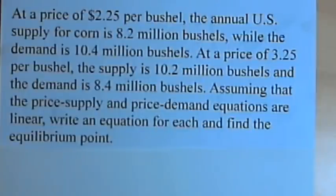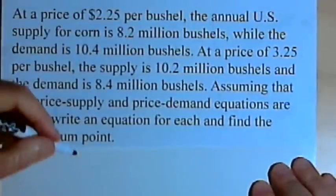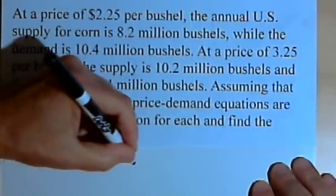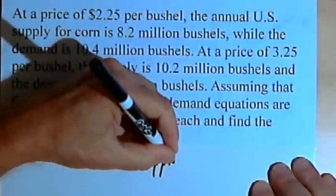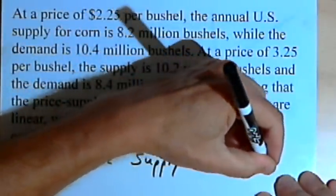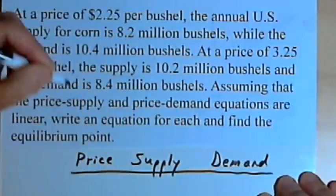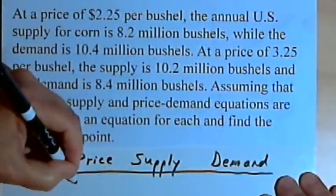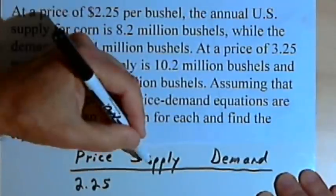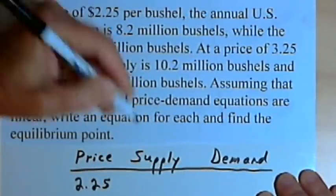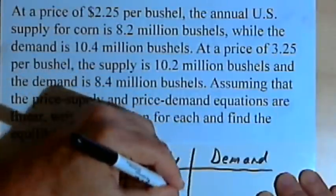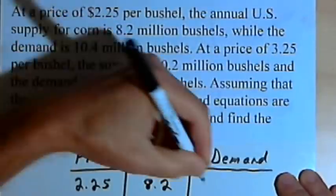Let's start out by taking all this information and putting it into a table. We're talking about three things: the price, the supply, and the demand. When the price is $2.25 per bushel, the supply is 8.2 million bushels, and the demand is 10.4 million bushels.